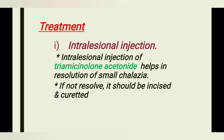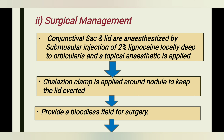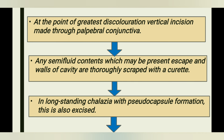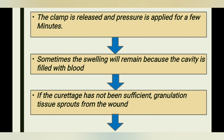If not resolved, it should be incised and curetted. For the surgical treatment, the conjunctival sac and lid are anesthetized with a submuscular injection of 2% lignocaine deep to the orbicularis muscle, and topical anesthetic is applied. The chalazion clamp is applied around the nodule to keep the lid everted and provide a bloodless field. At the point of greatest discoloration, a vertical incision is made in the palpebral conjunctiva. Any semi-fluid contents escape, and the walls of the cavity are thoroughly scraped with a curette. In long-standing chalazion, a pseudo-capsule forms and should also be curetted.